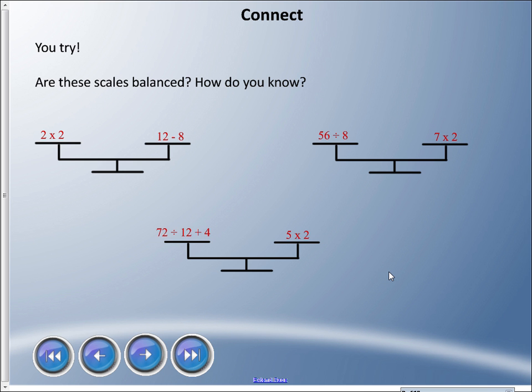All right, how about you try. Take a minute here. I want you to tell me, are these scales indeed balanced and how do you know? Let you pause that for a sec. All right, let's double check here. Are these balanced? 2 times 2 is 4, and 12 minus 8 is 4. Those equal. This is a balanced scale.